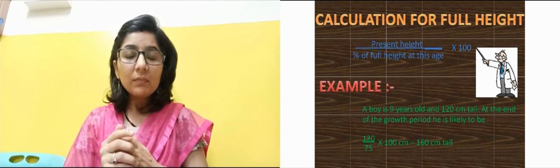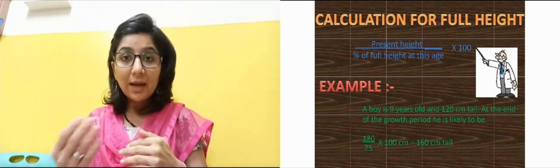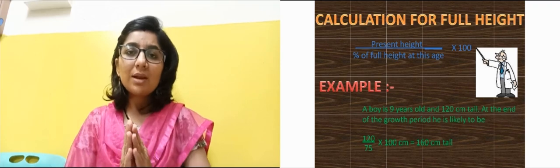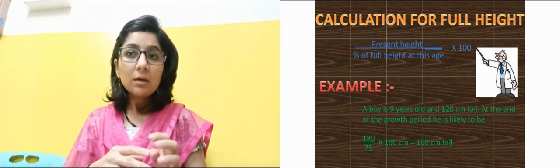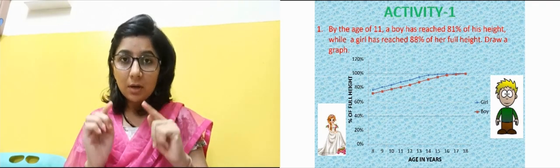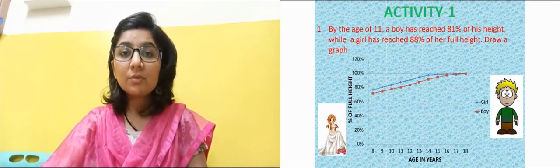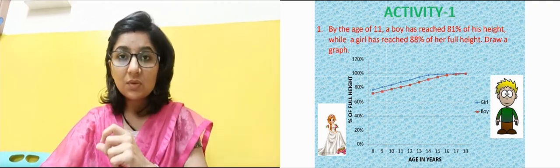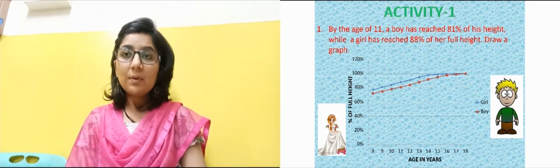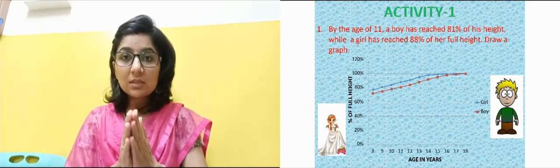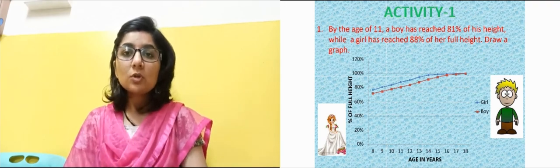There is a simple formula to calculate your maximum height. You measure your present height in centimeters, divide it by the percent of full height at your current age (given in the table), then multiply by 100. For example, a nine-year-old boy who is 120 cm tall — his percent of full height at age nine is 75%.